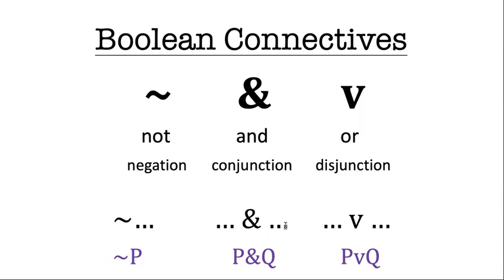Conjunction and disjunction are binary connectives. That means they have two gaps or ellipses in them where we can insert things. In all of these examples, I've inserted simple atomic sentence letters, but we can also insert complex letters there as well.